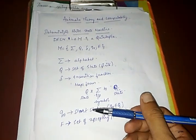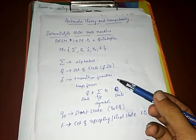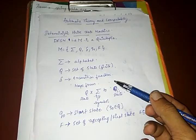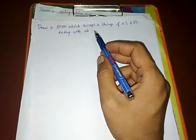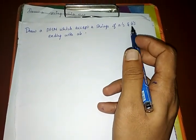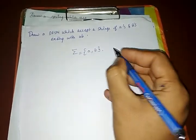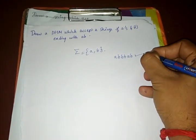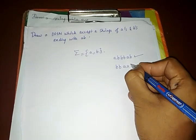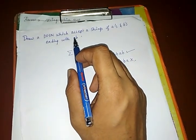An important note about DFSM: every state for every alphabet has to be defined — each and every alphabet must be defined in every state for it to qualify as a DFSM. The problem to solve is: draw a DFSM which accepts strings of a's and b's ending with a 'b'. The alphabet is {a, b}. A string like 'abbab' should be accepted, while a string like 'bbaba' should be rejected.